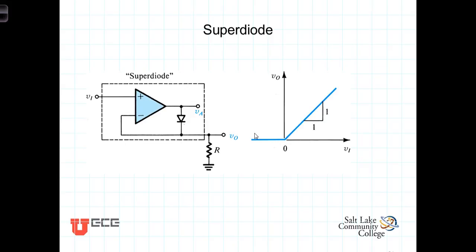The rectifiers we've studied so far work fine for power supplies and other applications where the peak voltage to be rectified far exceeds the diode junction voltage. But those circuits are inadequate for signals with peak values on the order of or less than the junction voltage, where the voltage of the signal isn't strong enough to push the diode into the conduction region.